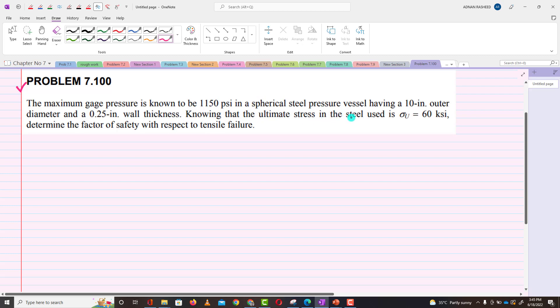Knowing that the ultimate strength stress in the steel used is σᵤ = 60 ksi, determine the factor of safety with respect to tensile failure.